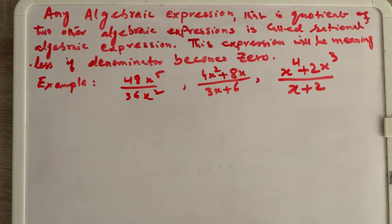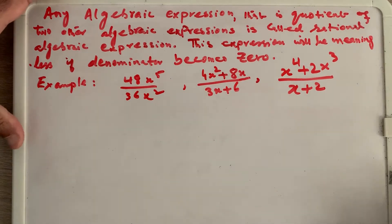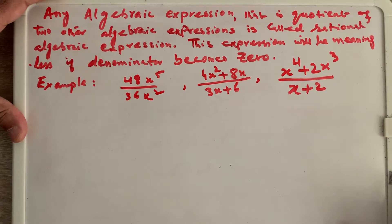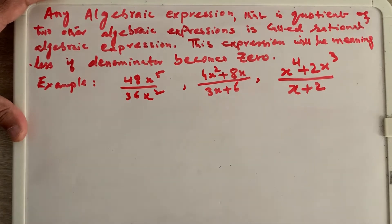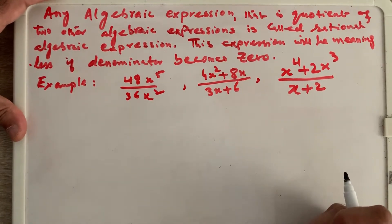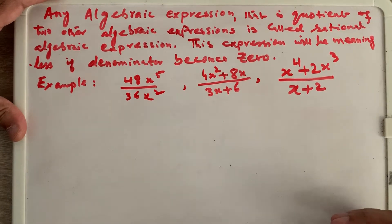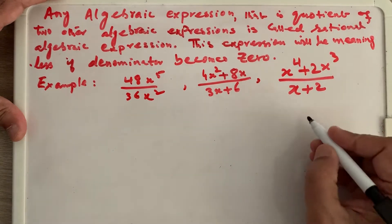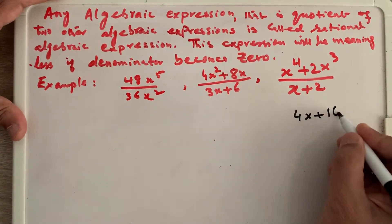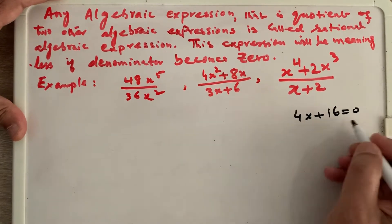One of the questions asked is regarding rational numbers or rational expressions. Algebraic expressions consist of constant numbers and variables, with the four basic operations of mathematics — addition, subtraction, division, and multiplication — involved in them. A linear algebraic equation is commonly written as 4x + 16 = 0. There is no exponent; it is a linear algebraic expression.